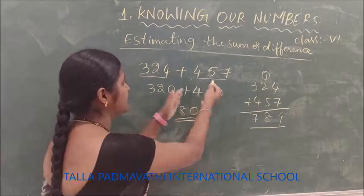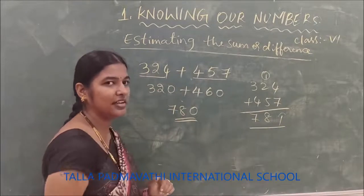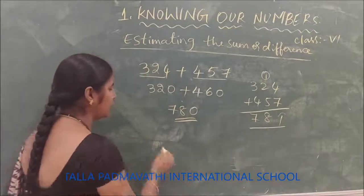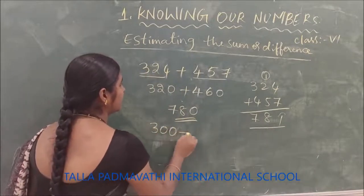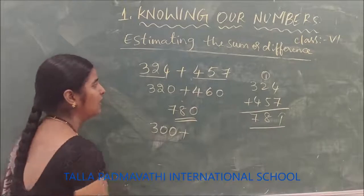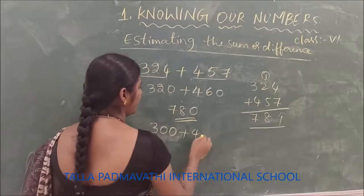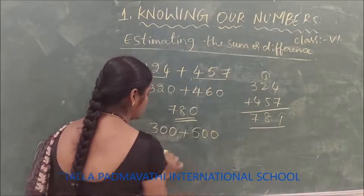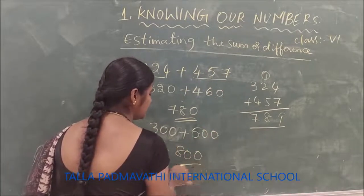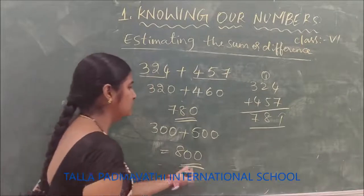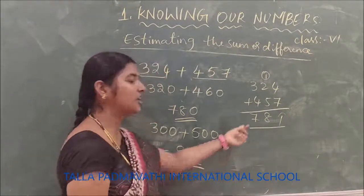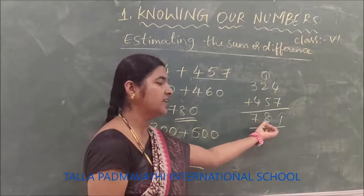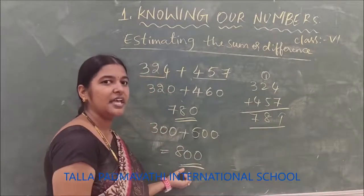We can also estimate these two numbers to the nearest 100. 324 can be rounded off to 300 and 457 can be rounded off to 500. So we are going to get 800. This is also almost correct — the difference is only in the tens. So the actual answer is 781 and this estimate of 800 is also a near estimate.